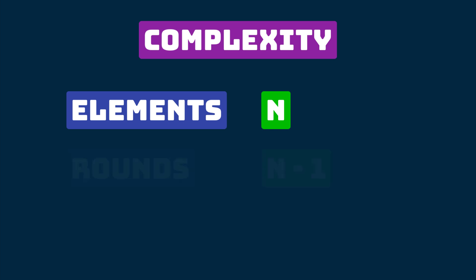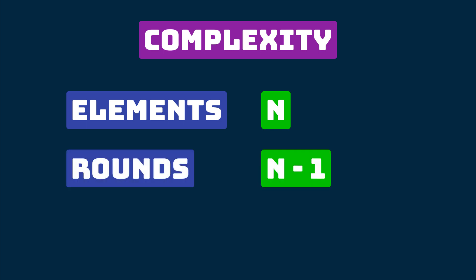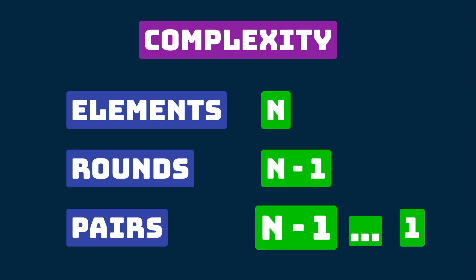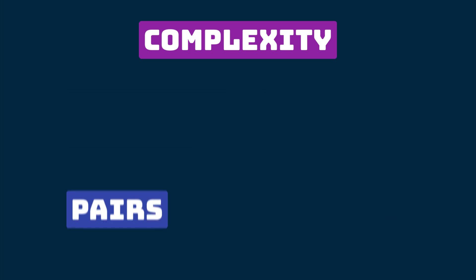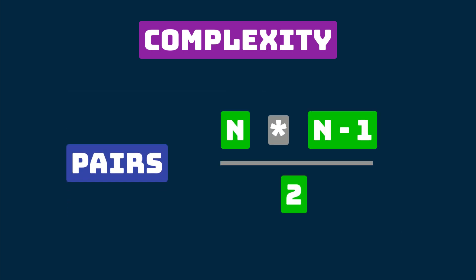Let's extrapolate that to n elements. In the case of n elements there will be n minus one rounds, with n minus one pairs on the first round to just one pair on the last round. There is a simple formula which allows us to find the total quantity of pairs: it is n multiplied by n minus one, divided by two.